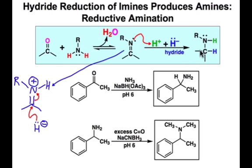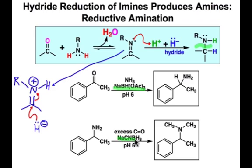In this product, the new bond is this carbon-nitrogen bond that was preceded by the carbon-nitrogen double bond resulting from imine formation of these two components. Typical hydride sources are sodium borohydride derivatives, such as sodium triacetate or sodium cyanoborohydride.